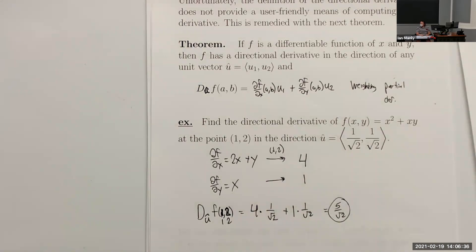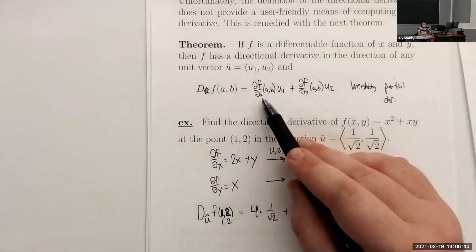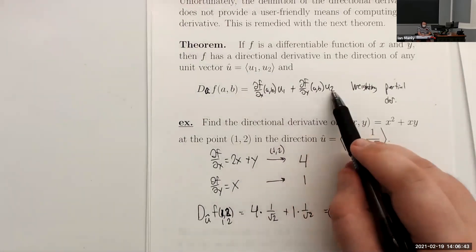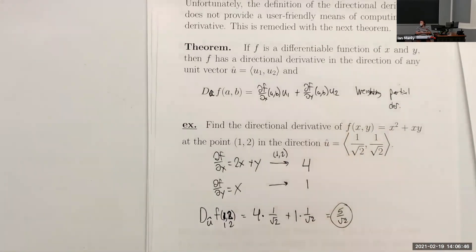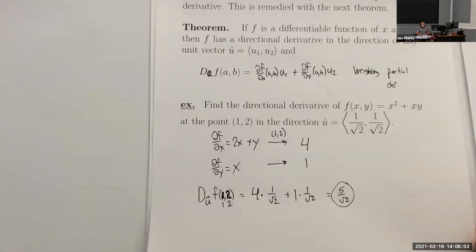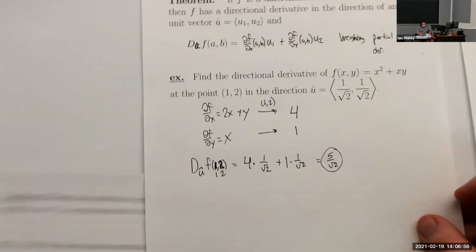If û has three dimensions, it works exactly the same way: ∂f/∂x·u₁ + ∂f/∂y·u₂ + ∂f/∂z·u₃. It works the same way even if you increase the number of input dimensions.